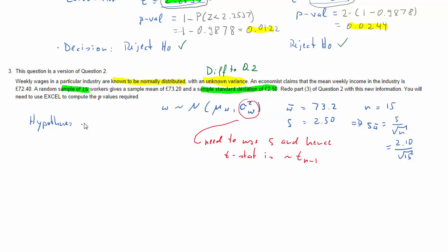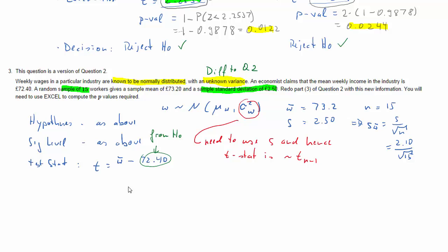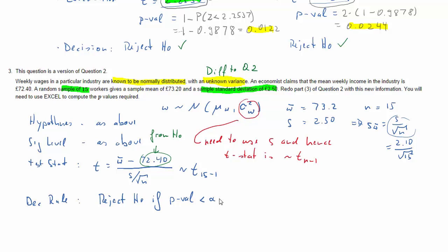We're asked to do both tests from before — two-tailed and upper-tailed. The hypotheses and significance level are exactly the same. The first difference arises in the test statistic: it's now w-bar minus the null hypothesis value for μw, divided by sw-bar, where sw-bar = s over square root of n. This test statistic is now t-distributed with 15 − 1 = 14 degrees of freedom. That distribution applies to both the two-tailed and upper-tailed tests.